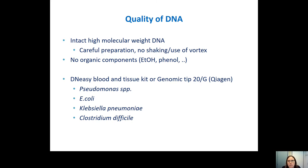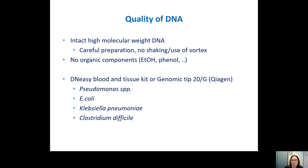We use two types of DNA isolation kits: the DNeasy Blood and Tissue kit and the genomic tip method, both from Qiagen. We use these for Pseudomonas species, E. coli, and Klebsiella pneumoniae, which are all gram-negative bacteria. We are now also experimenting with gram-positive bacteria, for example Clostridioides difficile, and we also want to use Staphylococcus aureus.